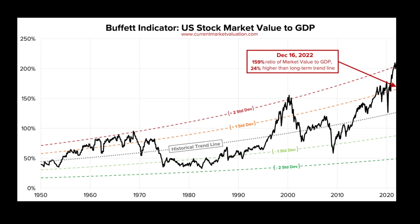Starting things off with the Buffett indicator — named after Warren Buffett, who said it's probably the single best indicator to know where we are with stock valuations. Basically it adds up the value of the US stock market and divides it by GDP, the output of the country, and kicks out a percentage. Here you can see it goes back to 1950 with a historical trend line, showing over-valuations and under-valuations where things are overbought and oversold.